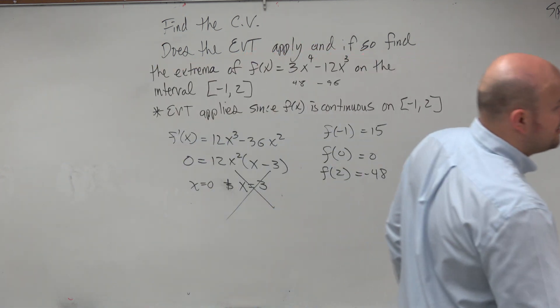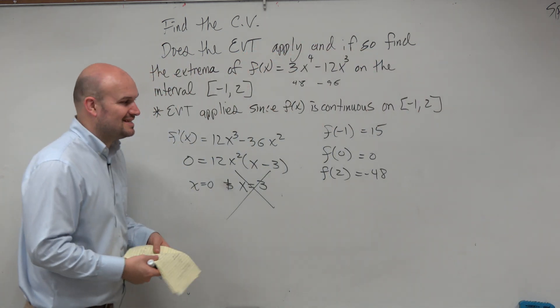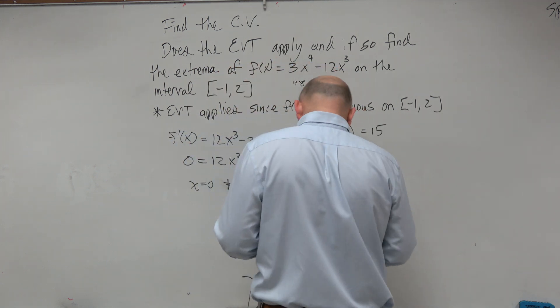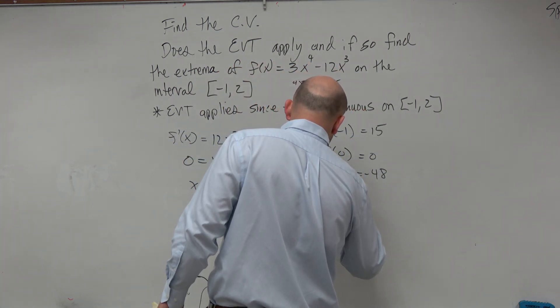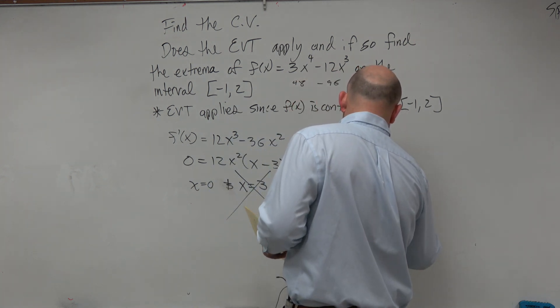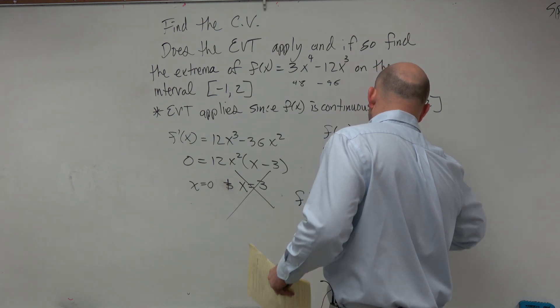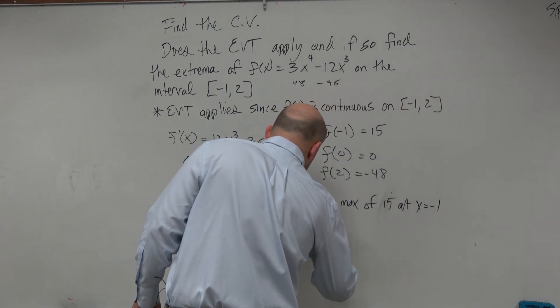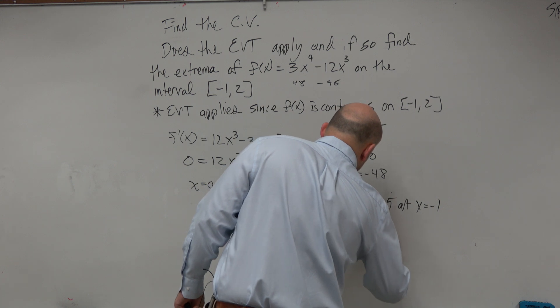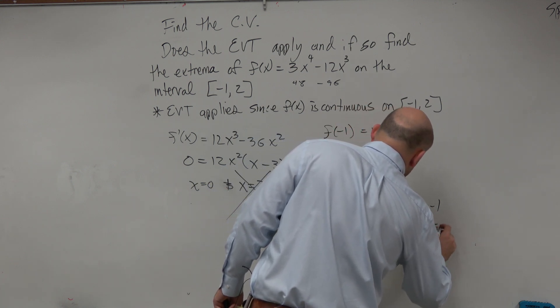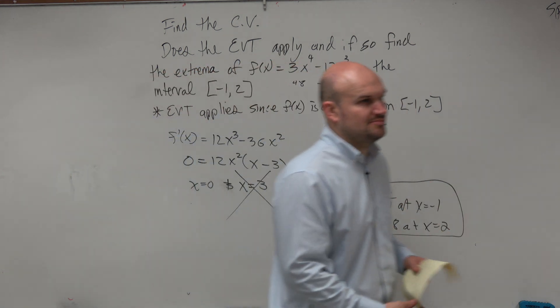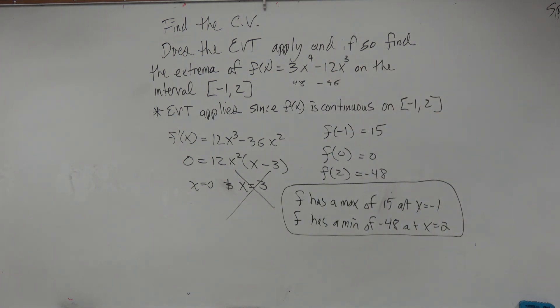So then we need to make sure that we are writing things in complete sentences. Not doing just, oh, there's my answer and having people hopefully guess and find our stuff. So please make sure you guys write this down. f has a max of 15 at x = -1. And f has a min of -48 at x = 2. Do you guys see how this is very clear in what I'm doing and what I'm explaining to somebody? I'm not saying, oh, my work is on the page. Just go and find it and give me credit. No, I'm very clear.